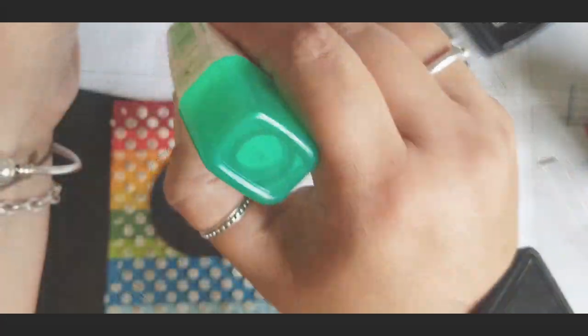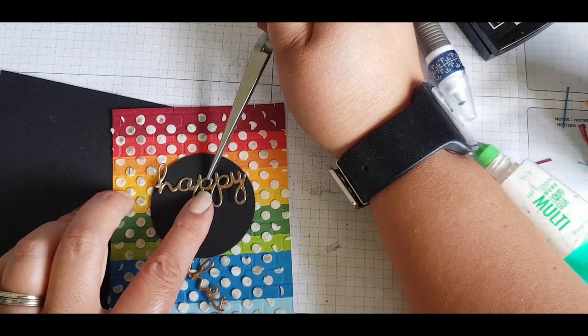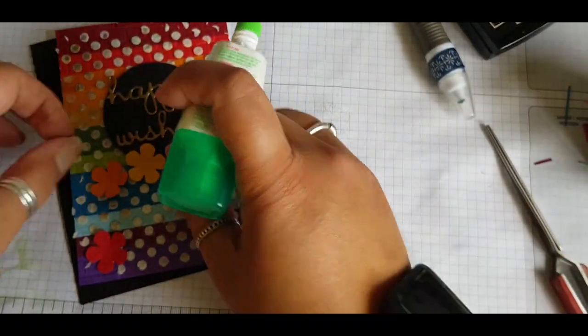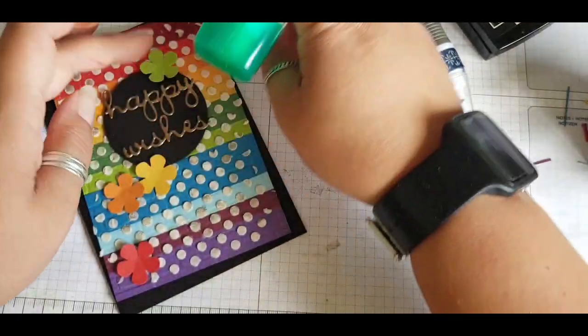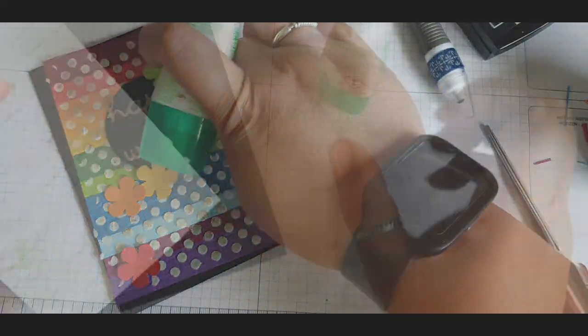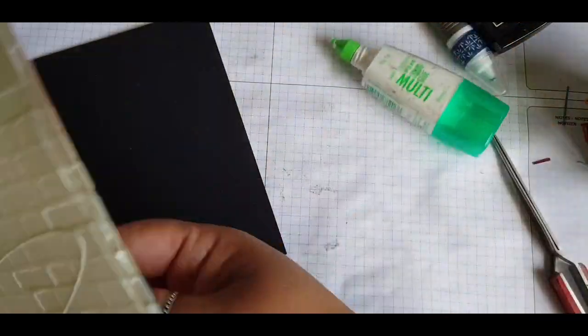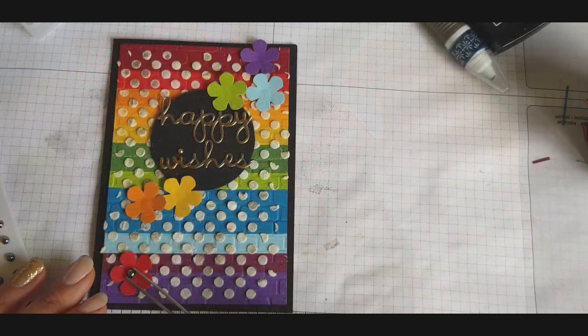Just carefully going in with my multi-purpose liquid glue and adhering the sentiment, and then plenty of glue in the center of the back of the flowers to make sure they stick down onto my card. Then gluing the whole thing down onto some black cardstock to finish off the card.